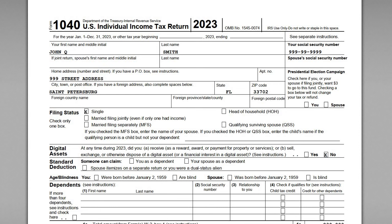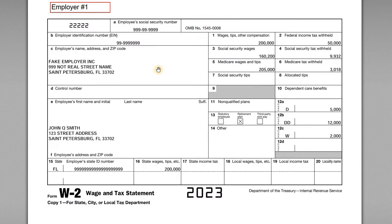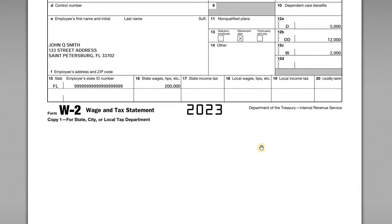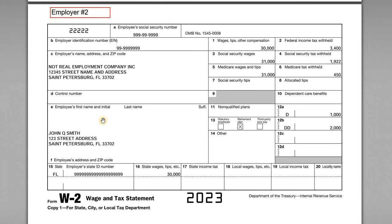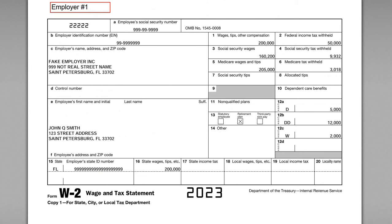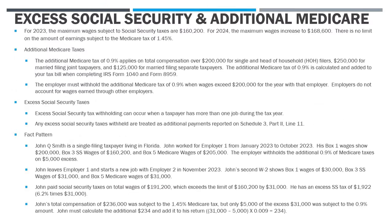We've got the full 1040 here. We'll go through those forms and all the other schedules. We've also got the sample W-2s — the first W-2 from employer number one, and then the second W-2 from employer number two when John leaves employer number one to go take a new job. We've also got one slide covering some background on the excess Social Security tax and the additional Medicare tax, and then some details on the fact pattern.